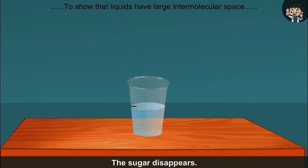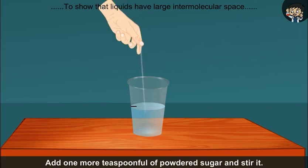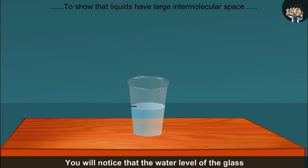The sugar disappears. Add one more teaspoonful of powdered sugar and stir it. This too disappears in water. You will notice that the water level of the glass does not change on dissolution of sugar.